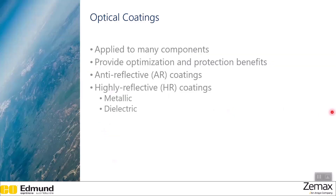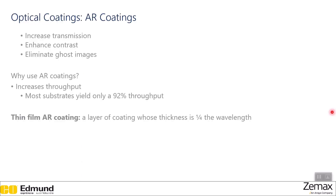Next, we'll discuss optical coatings. While optical coatings are not components in themselves, they are applied to many because they provide optimization and protection benefits. The two main types are anti-reflective (AR) coatings and highly reflective (HR) coatings. AR coatings increase transmission, enhance contrast, and eliminate ghost imaging. They increase throughput, as most substrates only yield about 92% throughput — meaning about 8% of rays are lost — and AR coatings help reduce that loss. A thin-film AR coating is simply a layer whose thickness is about one fourth of the wavelength of the rays passing through it.